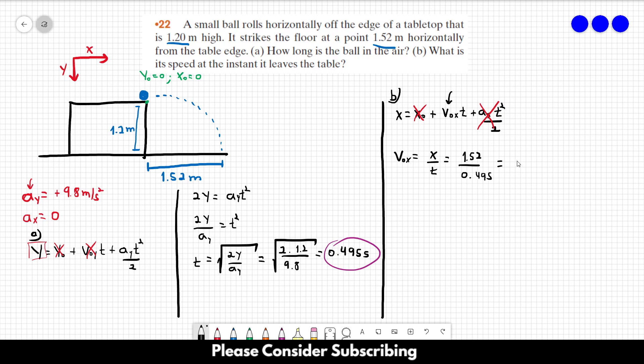And the answer of letter B is 3.07 meters per second. So this is the answer of this exercise.